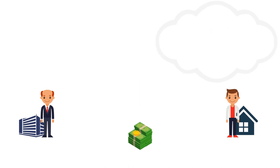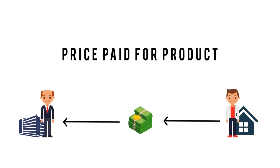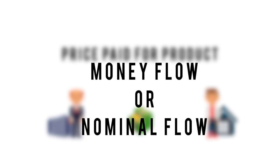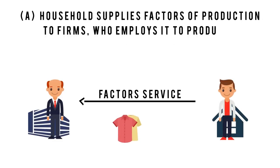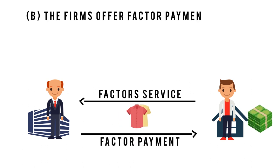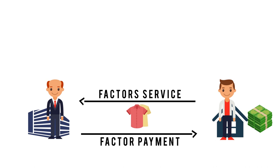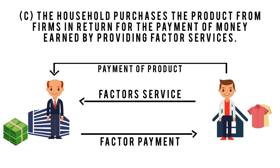The income generated by firms and distributed to households as factor income reaches back to firms as the price paid for the product. The flow of factor income from firms to households as reward for their factor services, and expenditure made by households on goods and services — due to which money flows back to the firm — is termed money flow or nominal flow. This explains the circular flow of income: households supply factors of production to firms, firms offer factor payments, and households purchase products from firms.